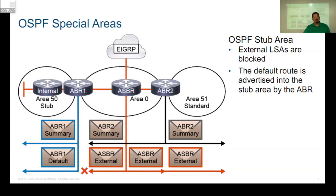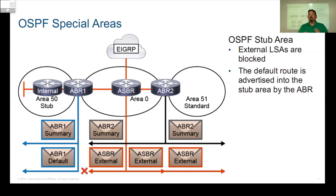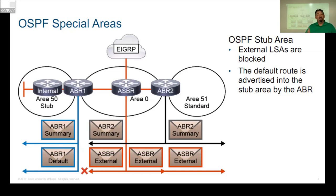When we deal with the idea of these special area types, first off we're trying to block certain LSA types — not all of them, but some of them. One of the things to understand is that any router in OSPF must know about all routes within their own local area, and a way to get out. That is the minimum amount of information any router in OSPF can actually know about.